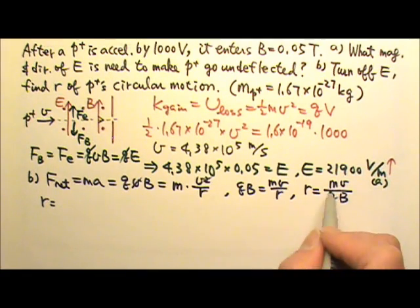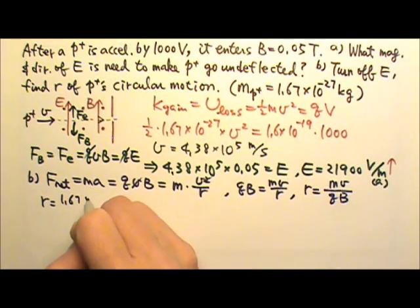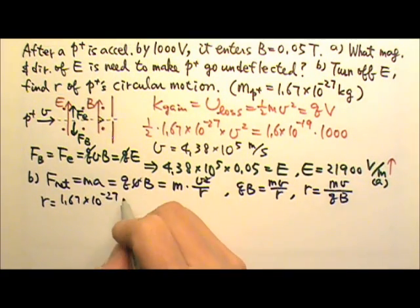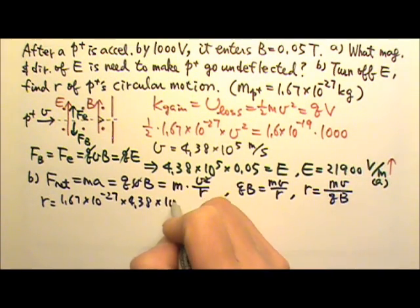So the radius is the mass, 1.67 × 10^-27. Speed is 4.38 × 10^5.